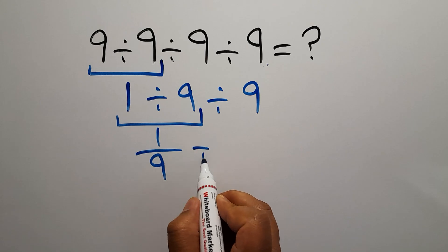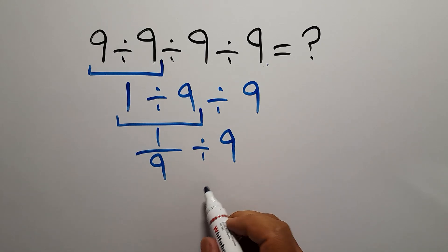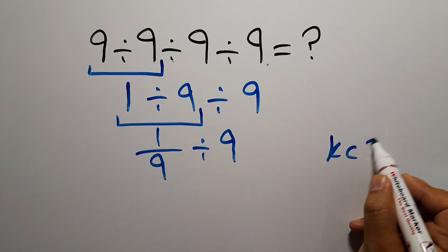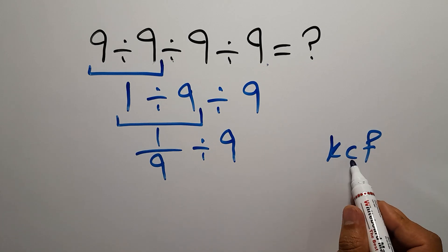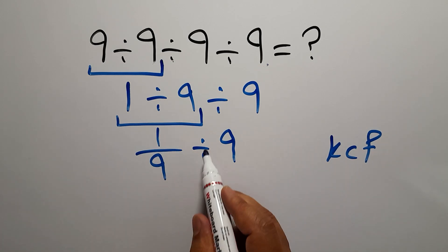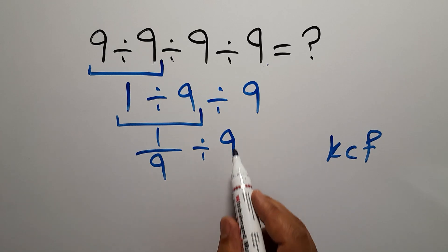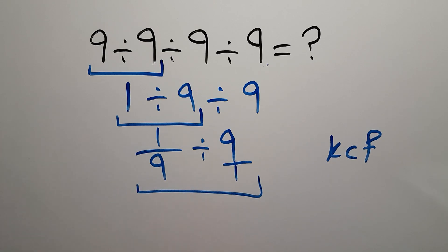Now according to the KCF rule, K stands for keep, C stands for change, and F stands for flip. Keep the first fraction and change division to multiplication and flip the second fraction. Okay, so we can write 1 over 9 then times 1 over 9.